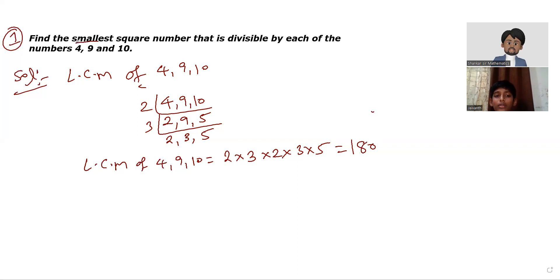Why? Because here the question, what they asked: find the smallest square. 180, why is it not a square number? We already know the squares: 12 square is 144, 13 square is 169, 14 square is 196, but it's not a square number.